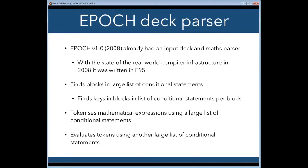So, a little bit more background. The original version of EPOCH in 2008 already had an input deck and maths parser system. Given what the state of the real world Fortran compiler infrastructure back in 2008 was like, it was written in Fortran 95. So, basically, the way you identified what block you were in, so what you wanted the code to do in response to that block, was a large list of conditional statements. And then, inside each one of those pieces of code dealing with that, there were more conditionals to find the keys. It's always been a tokenizing parser. So, to find those tokens, it had a large list of conditional statements. And then, when it needed to evaluate those tokens, there are more conditional statements. So, as you might imagine, lots of branches, not tremendously efficient. And, equally, the performance basically scales as the number of elements that you can have, the number of mathematical expressions that the parser understands.